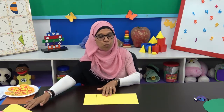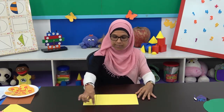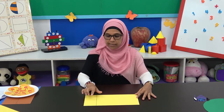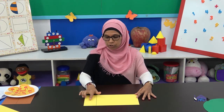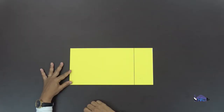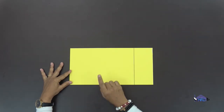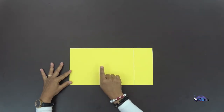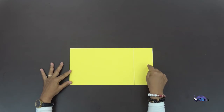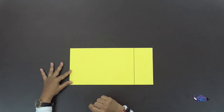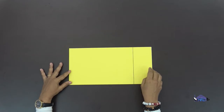Let's look at this one now. What shape is this? It's a rectangle. It's separated into two pieces. Is each piece equal or unequal? Tell me — look carefully. It's unequal. This piece over here is much bigger than the piece over here, so we say this is unequal.